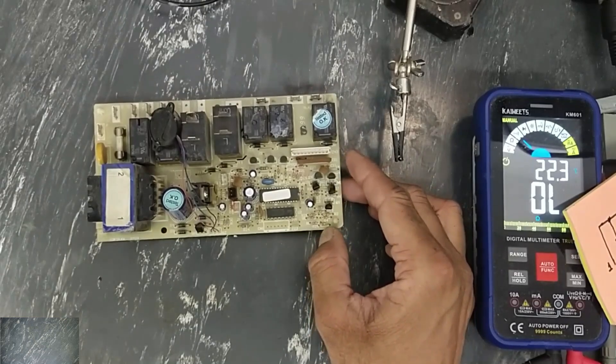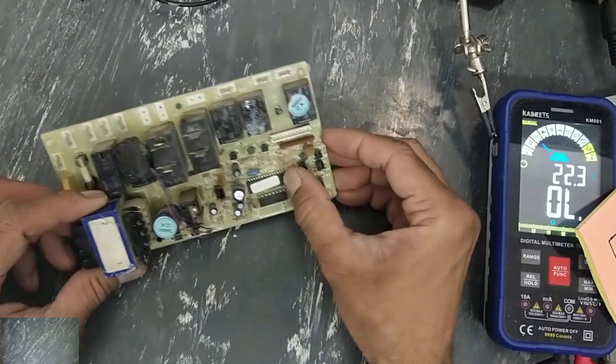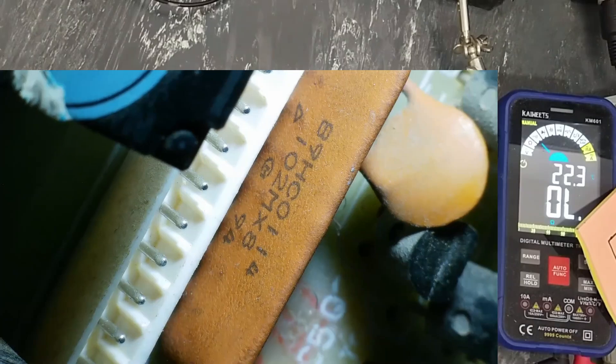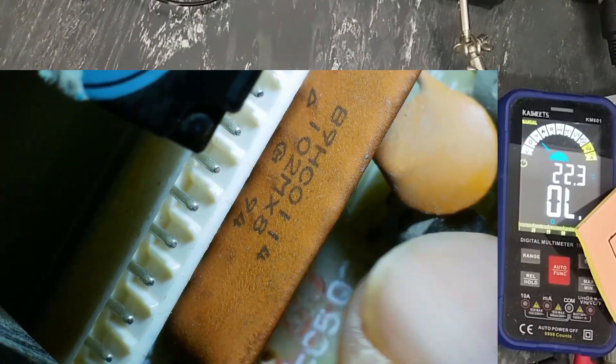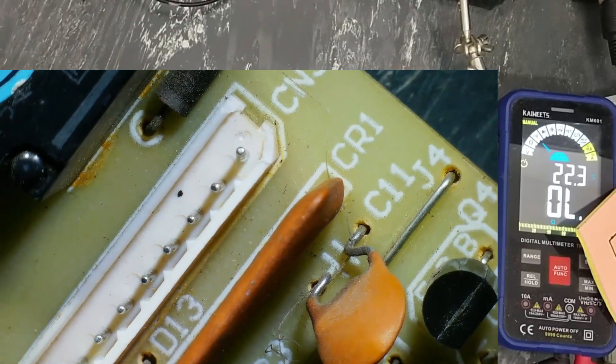Assalamu alaikum warahmatullahi wabarakatuhu friends, welcome back to my channel. When we see split unit board, there is a component that is looking like a resistor network. The marking is 102 mx8. It is not resistor network, PCB marking is cr1.